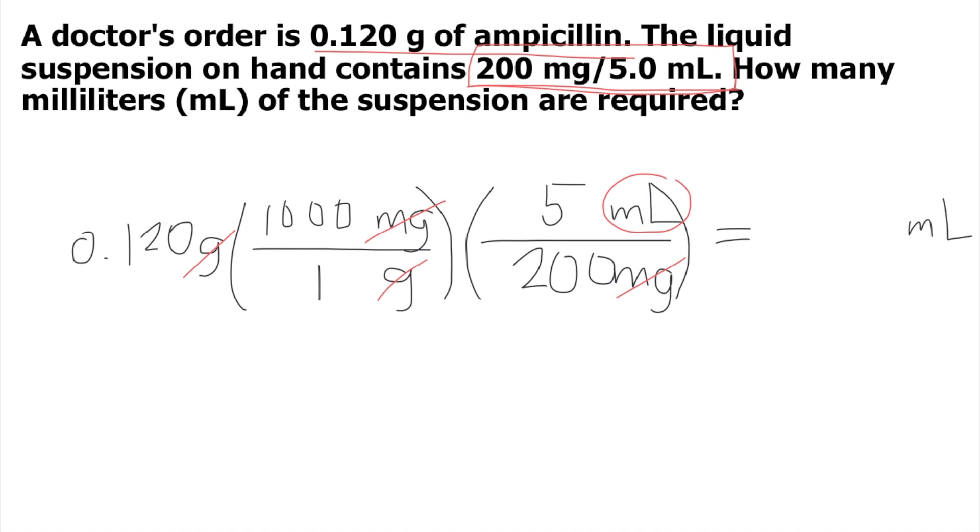Now solve this using your calculator. We have 0.120 times 1,000 divided by 1 times 5 divided by 200. The answer equals 3 mL or 3.0 mL. This is the answer to our question.